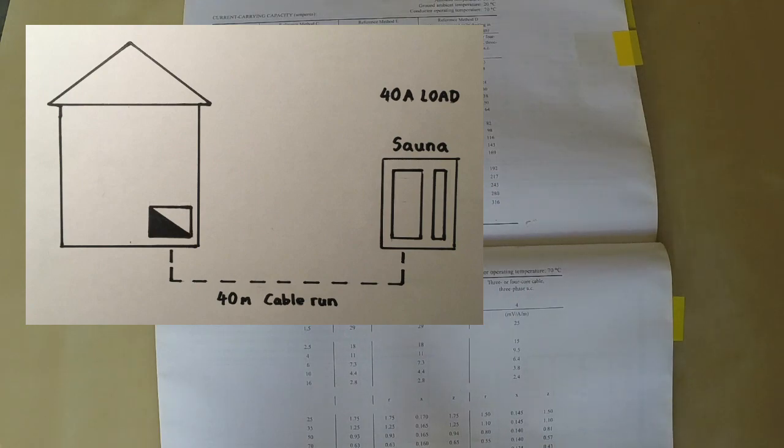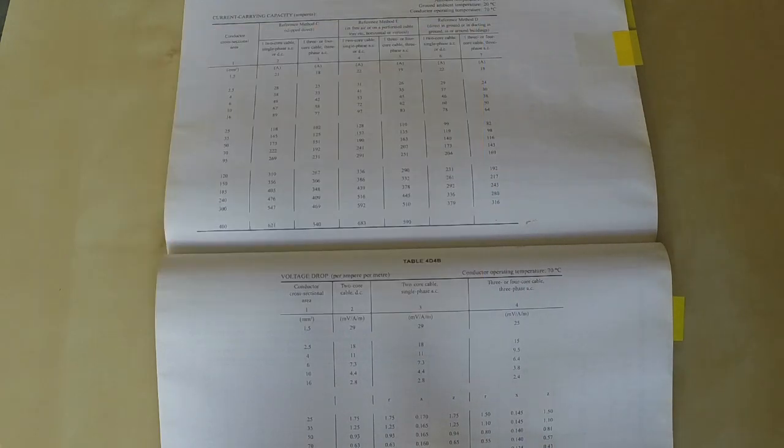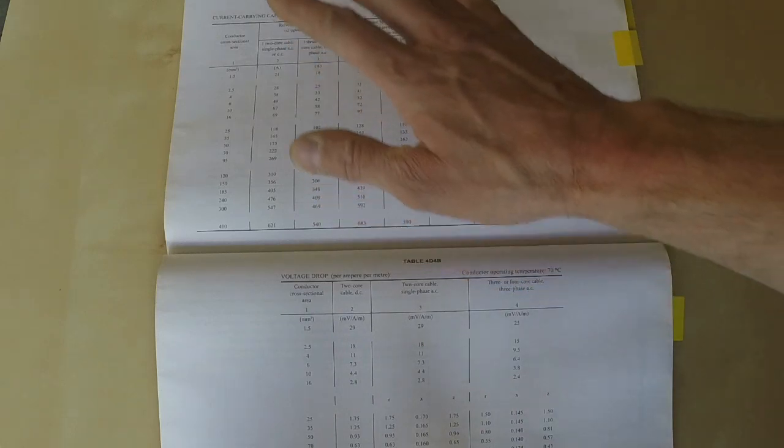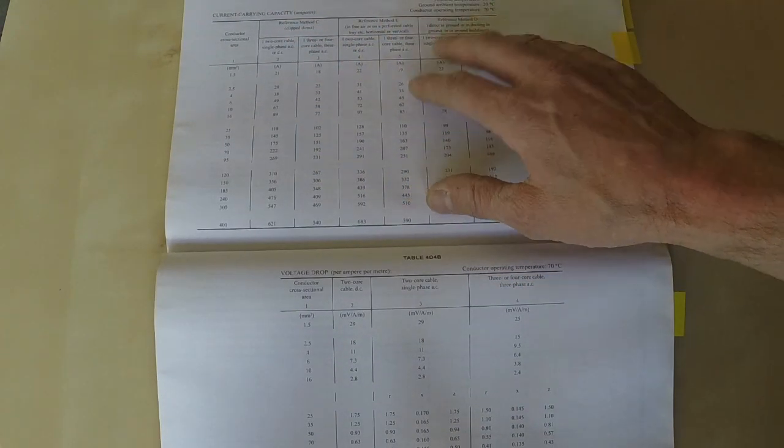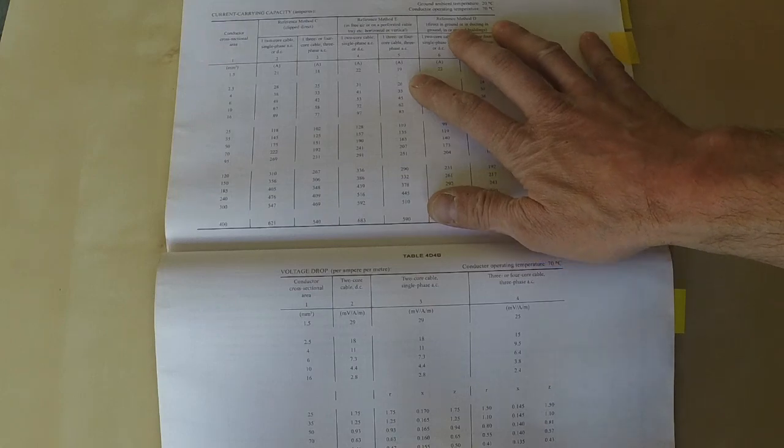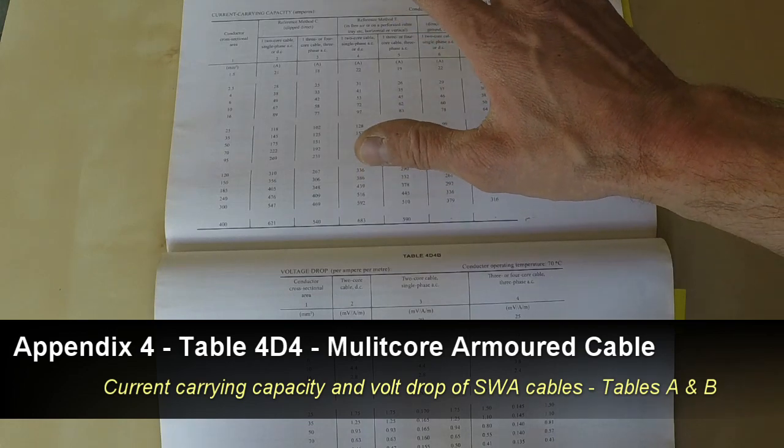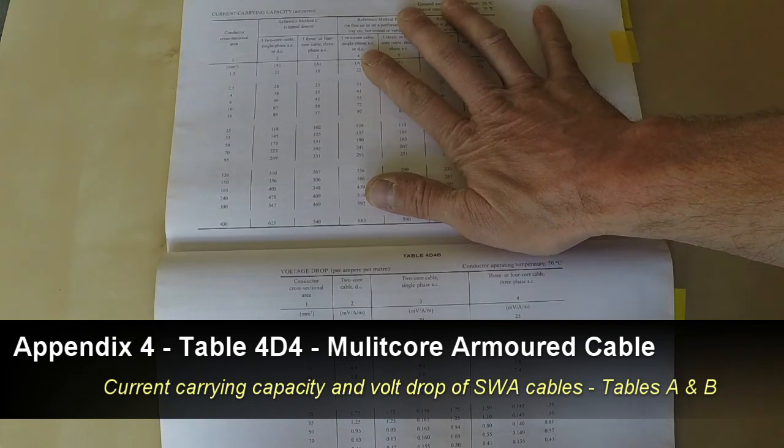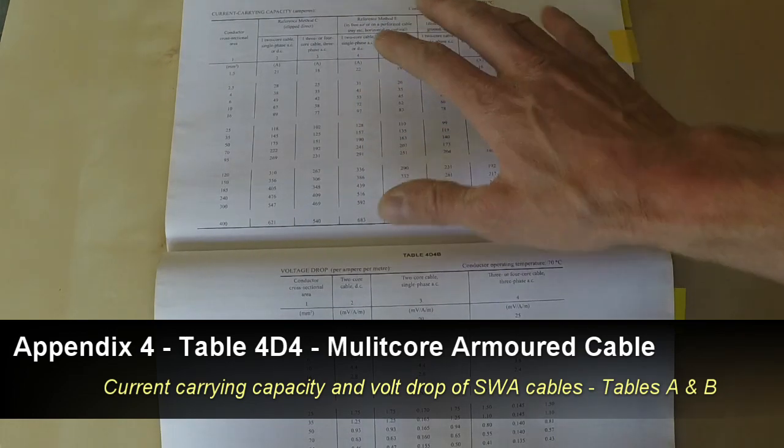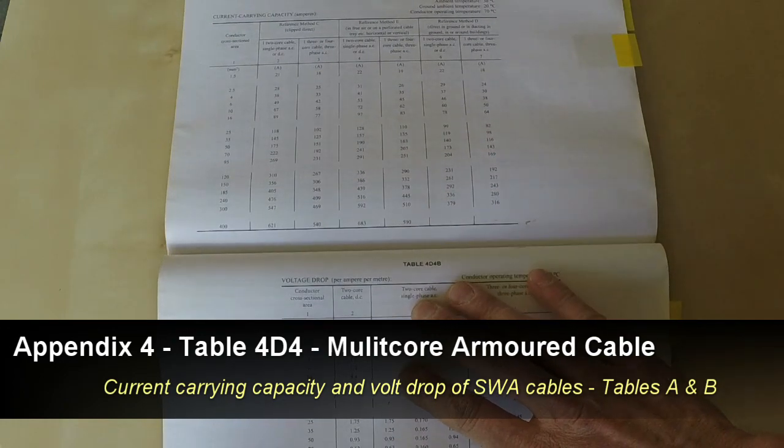Firstly, on this regs book page 362 is your tables for the current capacity in the cable. That's the top, and then the bottom is the volt drop, which is your millivolt per amp per meter.